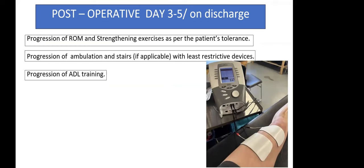On post-op days 3 to 5, or at discharge, we give progression of range of motion and strengthening exercises as per the patient's tolerance. Stair and ambulation training is included, aiming for greater ambulation with least restrictive devices — progressing from walker to more independent ambulation. If the muscle is not getting recruited, we use NMES (neuromuscular electrical stimulation) for better control and activation of the quadriceps, which is likely to go into inhibition.